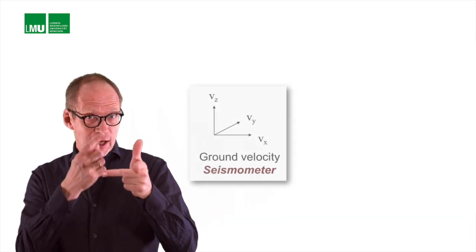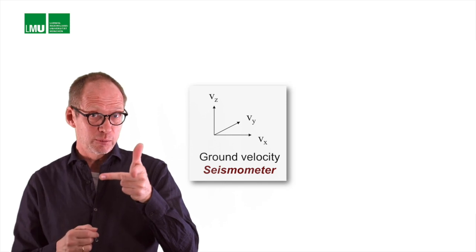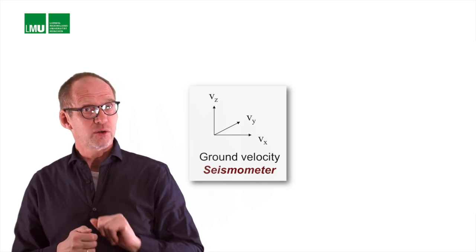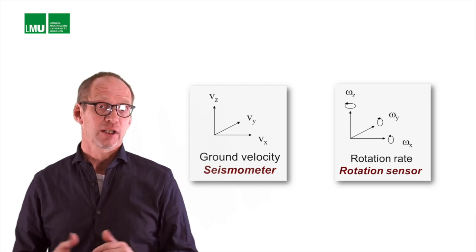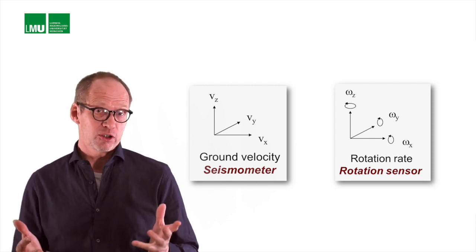These seismometers measure usually up and down motions and two horizontal motions. But the ground also rotates around three orthogonal axes, and it has been very hard to record, even impossible, and it's not routinely done in seismology.